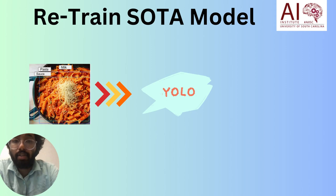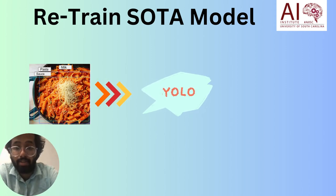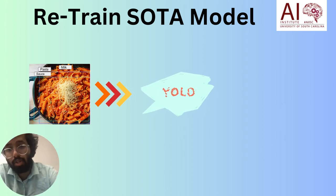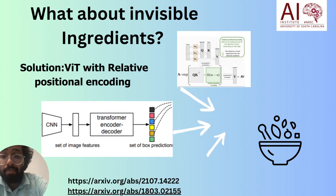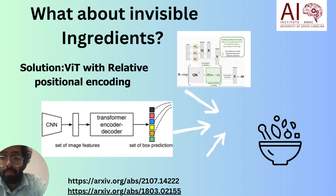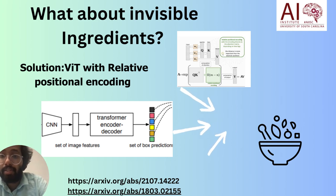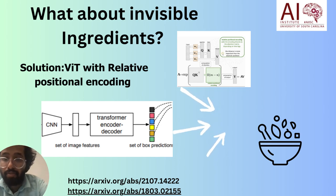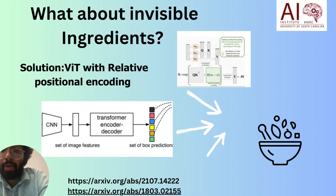Now we have the dataset and need to test how good it is, so we use the state-of-the-art object detection model YOLO V8, released in 2023. The real deal-breaker is invisible ingredients — how do we detect ingredients like salt, which are very important for any meal but invisible in the image? We make use of vision transformers with relative positional encoding to get nearby object context. For example, if you are eating pancakes in the morning, it will tell us there is a very good chance there is sugar in it.